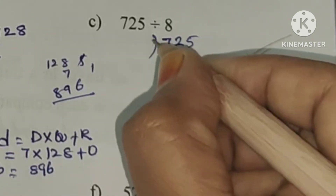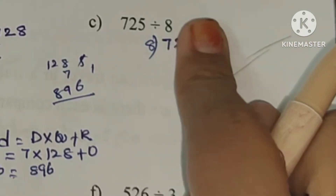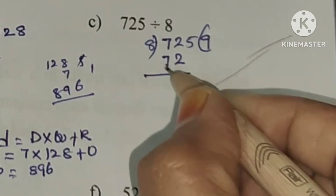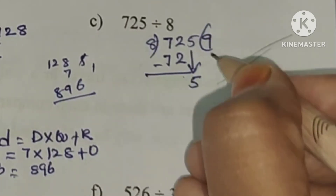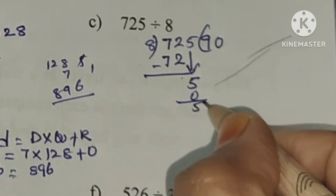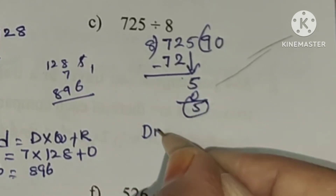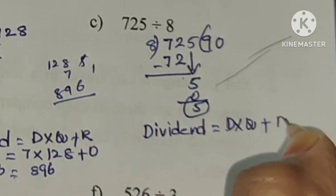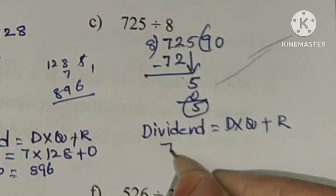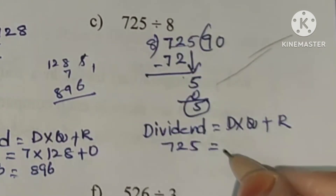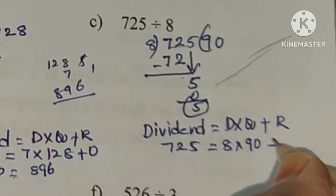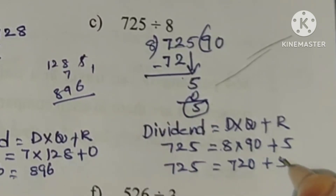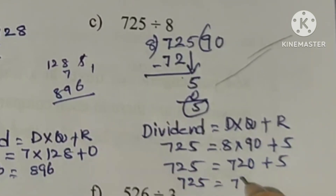Next: 725 divided by 8 gives quotient 90, remainder 5. Checking: dividend equals divisor into quotient plus remainder. 725 equals 8 into 90 plus 5. 8 nines are 72, so 720 plus 5 equals 725. 725 equals 725.